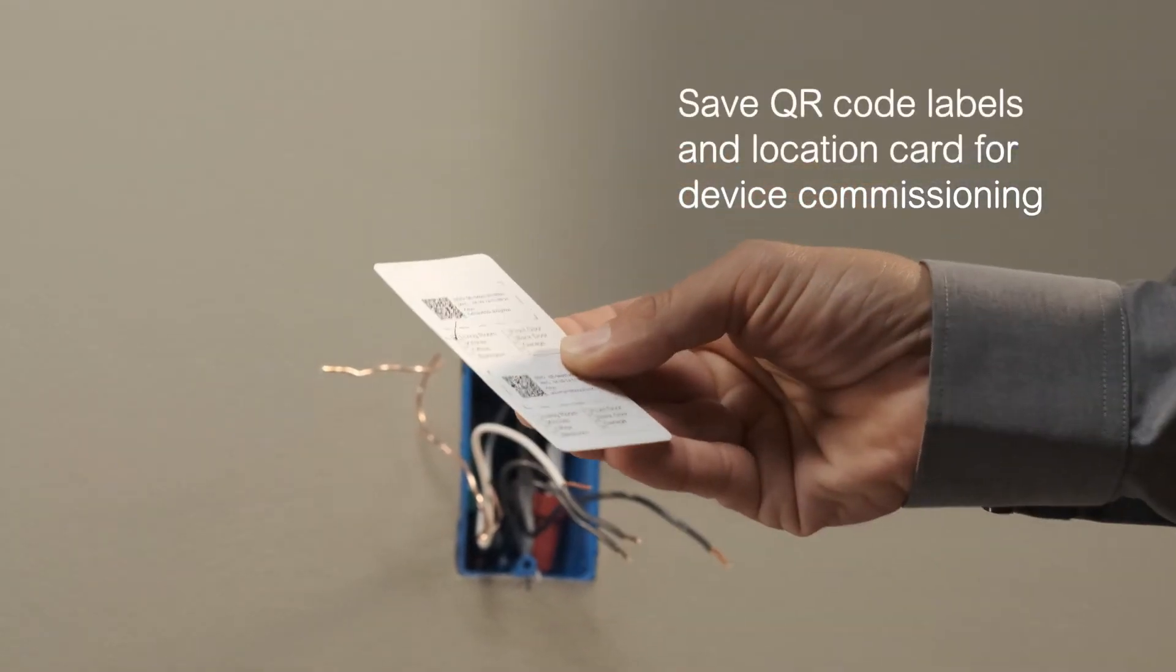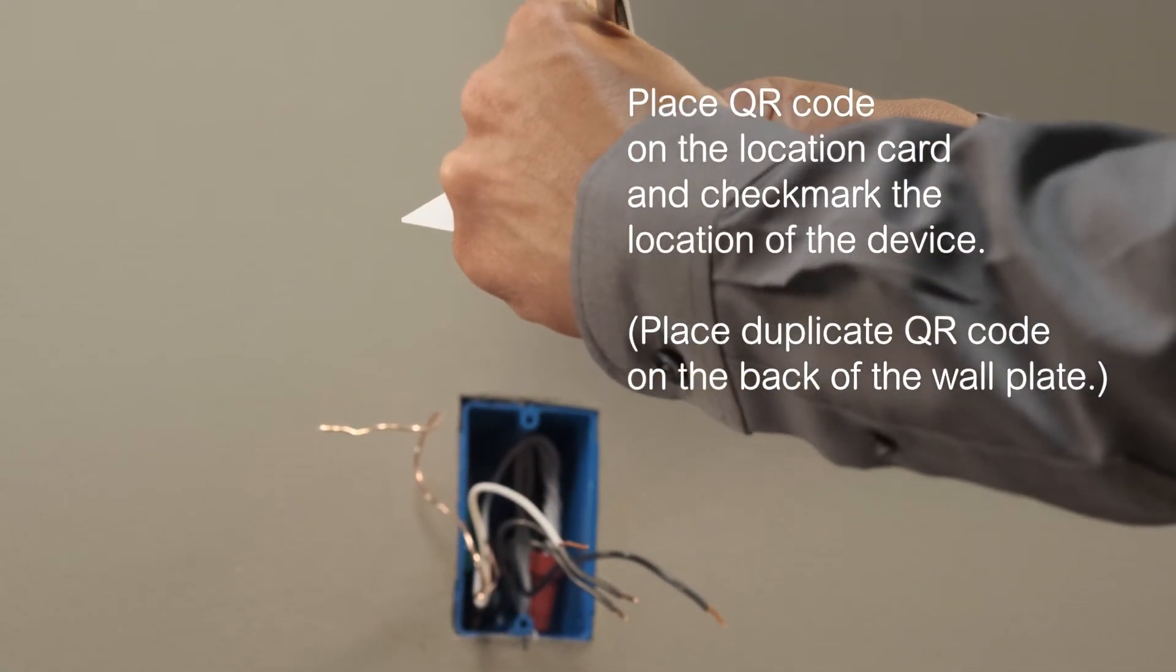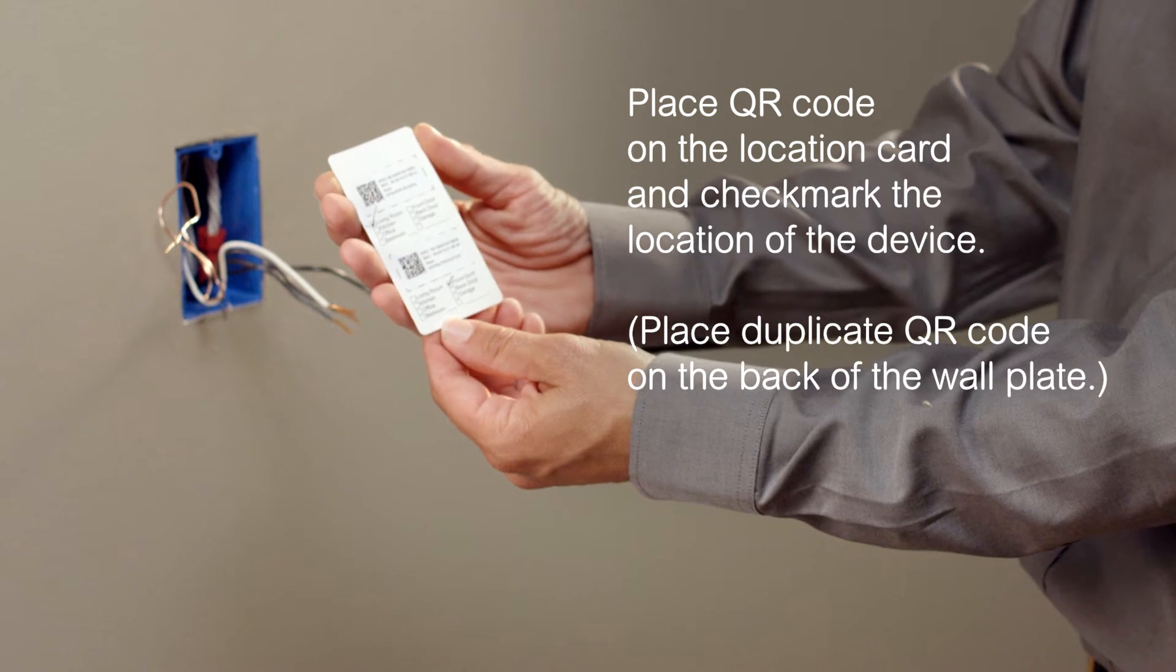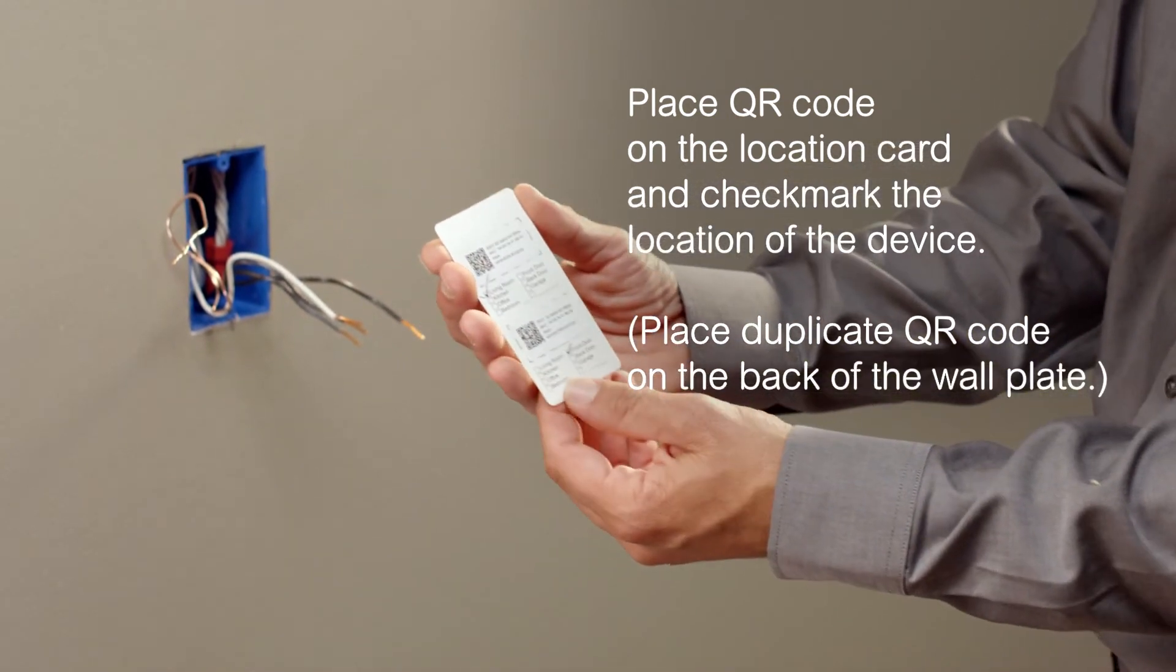You'll need the QR code later to commission the device on the network. It's best to place the QR code on the location card and check mark the location of the device. Place the duplicate QR code on the back of the wall plate.